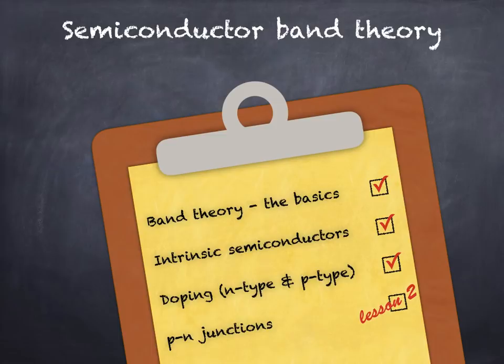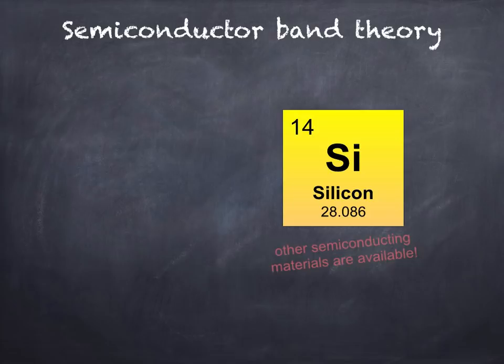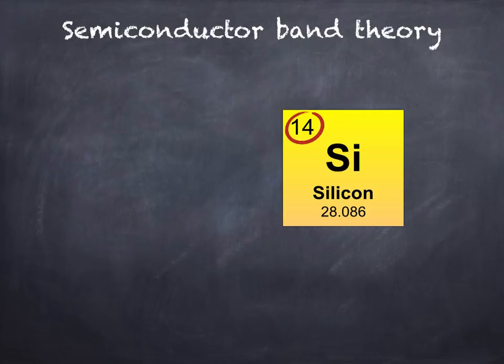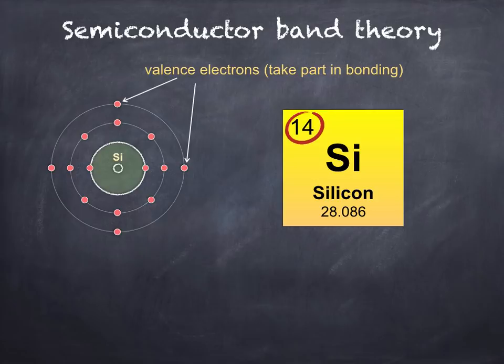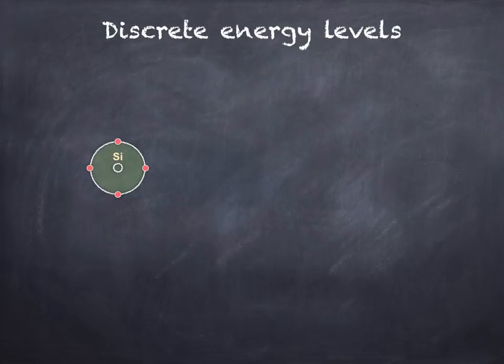First of all we're going to look at the element silicon, although other semiconducting materials are available. Silicon has the symbol Si and an atomic number of 14, meaning that silicon atoms contain 14 electrons: two in the first shell, eight in the next, then four in the outer shell. We refer to these outer electrons as valence electrons — the electrons which can form chemical bonds. We'll simplify our model of the silicon atom to show only the four outer valence electrons which take part in bonding.